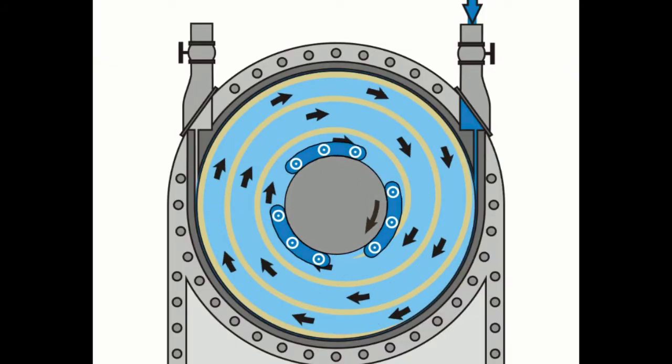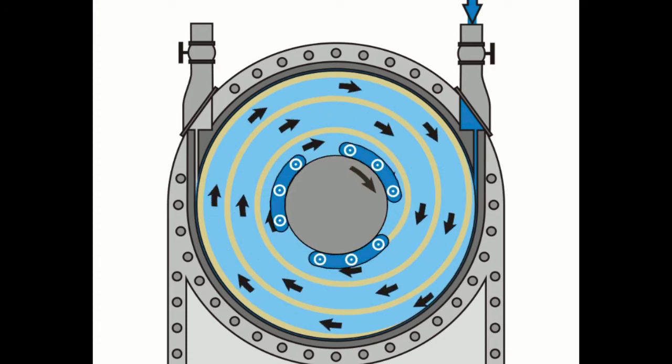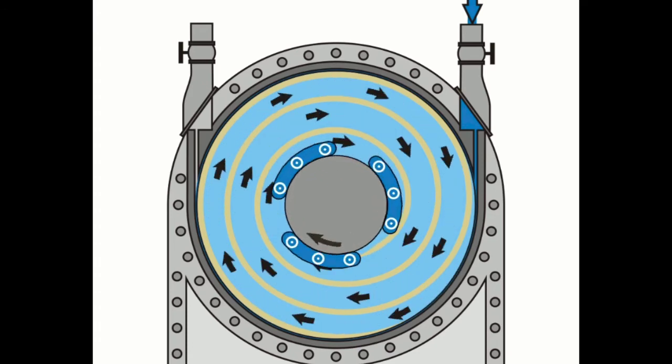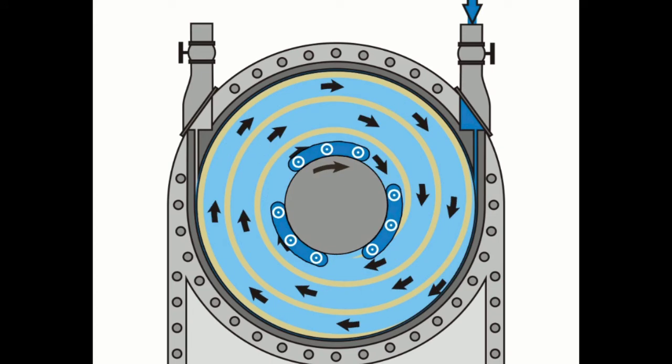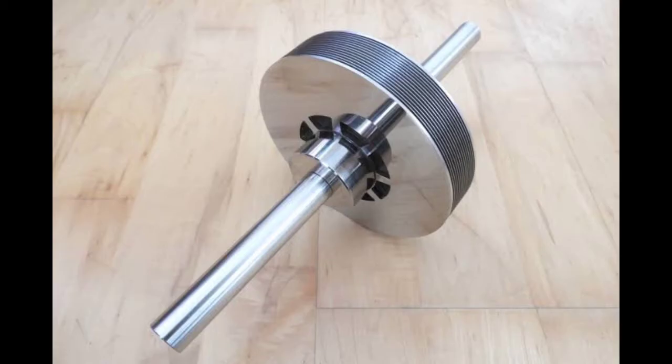The Tesla turbine is a bladeless centripetal flow turbine patented by Nikola Tesla in 1913. It is also known as the boundary layer turbine, cohesion type turbine, and Prandtl layer turbine after Ludwig Prandtl, because it uses the boundary layer effect and not a fluid impinging upon blades as in a conventional turbine.